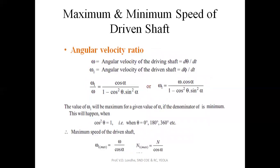These are the formulas for finding maximum and minimum speed. Omega is the angular velocity of the driving shaft and omega one is the angular velocity of the driven shaft. The value of omega one is maximum when cos squared theta equals one, that is when theta is zero, 180, or 360 degrees. The maximum speed of the driven shaft is given by the angular velocity of the input shaft divided by cos alpha.